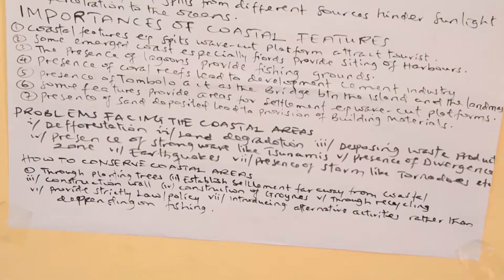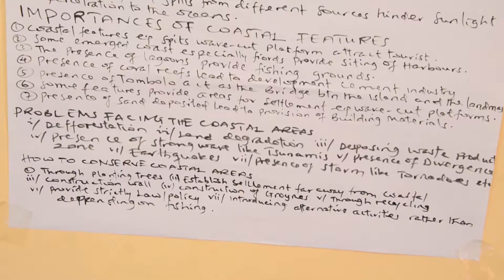Land degradation is the destruction of land, possibly for making settlement or for making paths. Therefore, this causes coastal areas to be eroded. Another problem is disposing of waste products on the coastal areas, which is very prohibited and harmful in nature, and is one of the factors causing problems facing coastal areas.